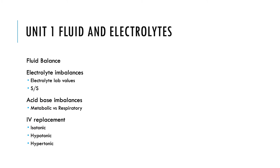Acid-base imbalances: is this metabolic or respiratory acidosis or alkalosis? How do we know that? Do we remember our formulas? The acid-base questions I kept are identification or treatment related, but not compensation. IV replacement: if we've got a metabolic or respiratory acidosis or alkalosis, we need to give them fluid to correct the situation. Does it need to be hypertonic, hypotonic, or isotonic? What do those fluids look like? What are the names of those fluids?